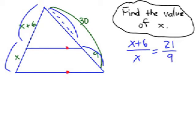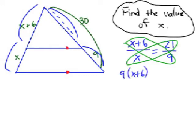So now we cross multiply. We should be able to get an equation we can solve. Let's take a look. 9 times X plus 6, we're going to have to use the distributive property, equals 21X. 9 times X and 9 times 6 would be 9X plus 54 equals 21X.